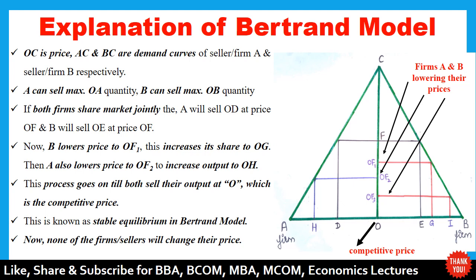Then seller A is losing customers to B, so seller A lowers its price to OF2. With this, seller A now increases its output to OH. Now seller B reacts by further reducing its price, and the output then increases. Then again, sellers A and B will compete until both sell their product at the competitive price.